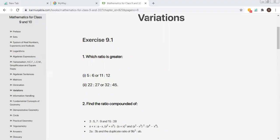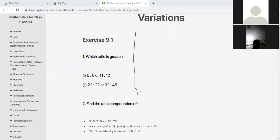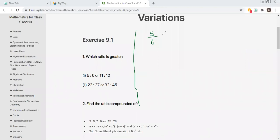Am I recording? Okay, Exercise 9.1 question number one. We have which ratio is greater: 5 ratio 6 or 11 ratio 12. So 5 ratio 6 and 11 ratio 12.